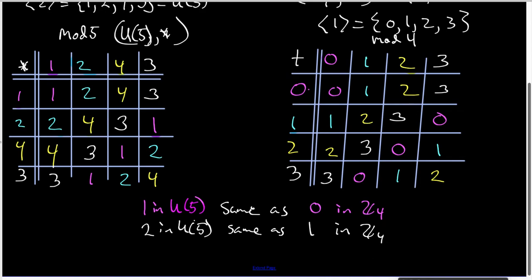And now what I want to notice is that the 2 in U5 is the same as the 1 inside Z4. And these were in this color. And the next thing that I want to notice is that the 4 in the U5 table is playing the same role as the 2 in the Z4 table because these are the things that are in yellow in both tables.